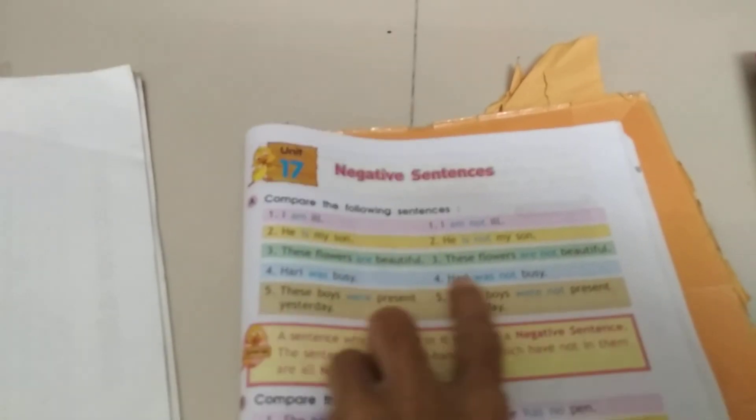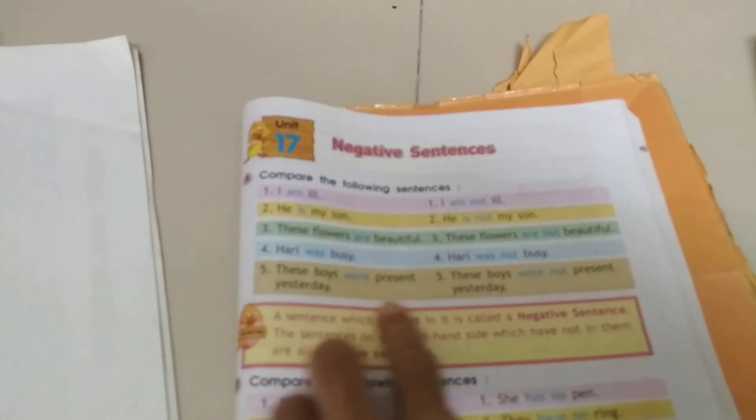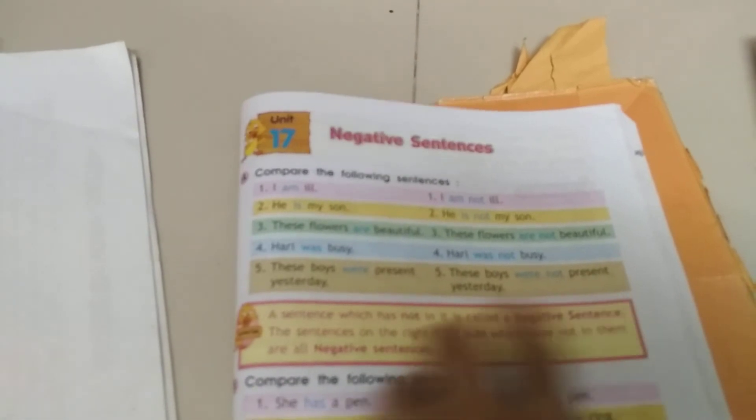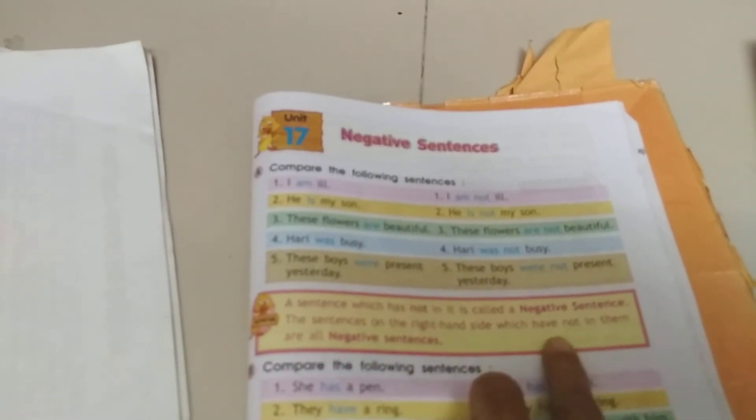Harry was busy. Harry was not busy. These boys were present yesterday. These boys were not present yesterday. A sentence which has not in it is called a negative sentence. Sentences on the right hand side which have not in them are all negative sentences.